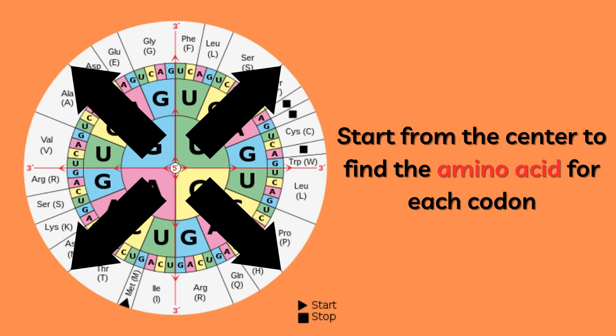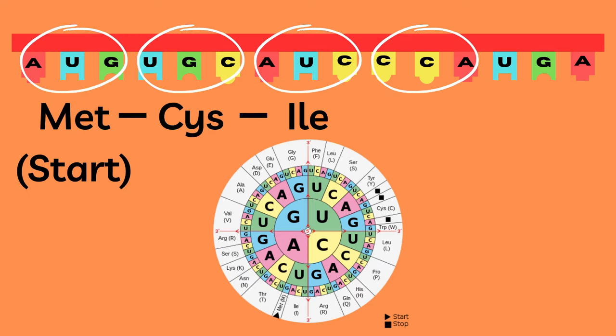The codon wheel is almost even more intuitive — you simply read from the center outwards. Let's use the same example to read out the final two codons. Next comes CCA. By simply starting from C, going to the next C, and all the way out to A, we see that the next amino acid in the chain is proline.